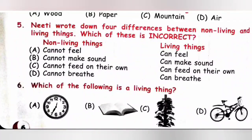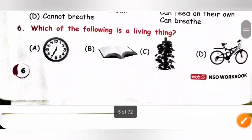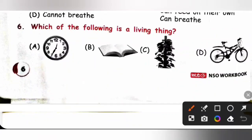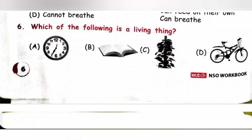Question 6: Which of the following is a living thing? Option A: clock. Option B: book. Option C: plant. Option D: cycle. We know a plant is a living thing, so option C is the correct answer.